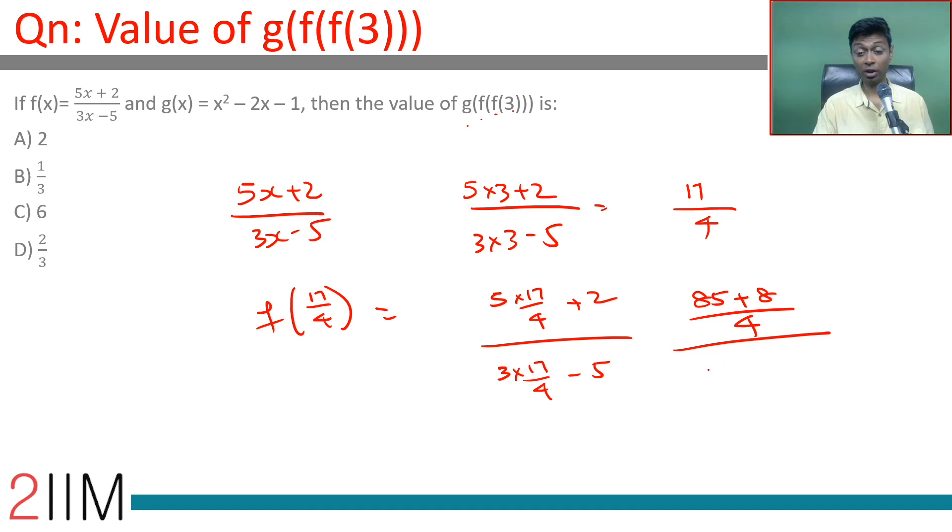Wonderful! So this is 93 by 31, which is 3. Brilliant! f(f(3)) is 3. We need to find g(3). g(3) can be written as (x minus 1) whole square minus 2.